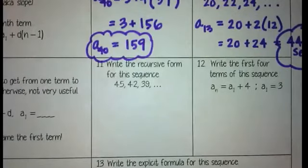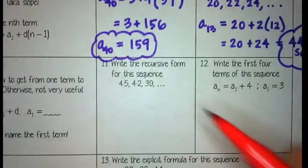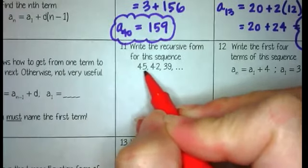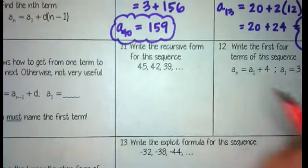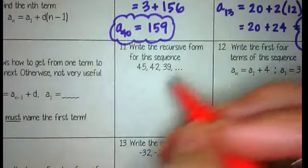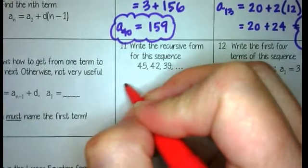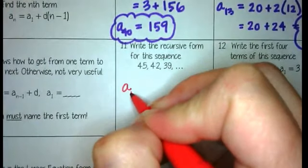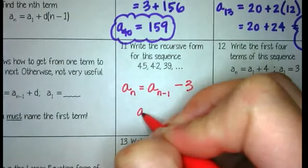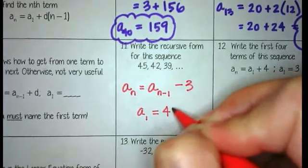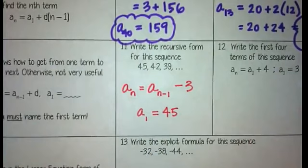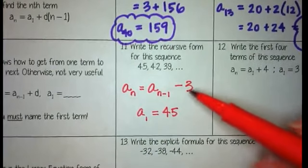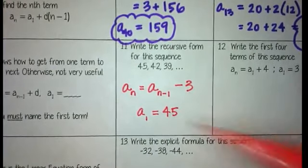Number 11, write the recursive form for the sequence. Well, the sequence starts at 45, and it looks like we're subtracting 3 each time. So we're going to say that if you want the nth term, you're going to take the one before it and subtract 3. And that is starting with 45. And that's it. So all you're doing is filling in the D and filling in the first term.